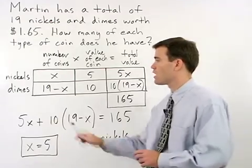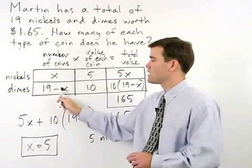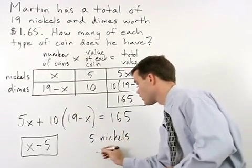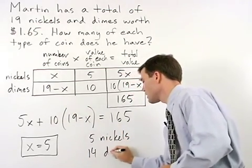To get his number of dimes, we take 19 minus x, which is 19 minus 5, or 14 dimes.